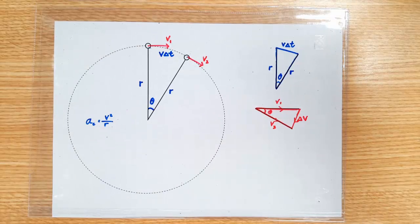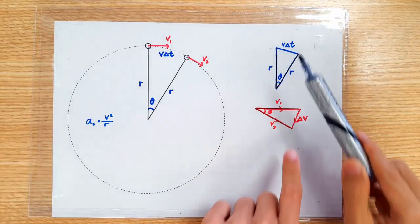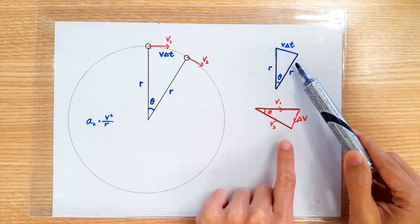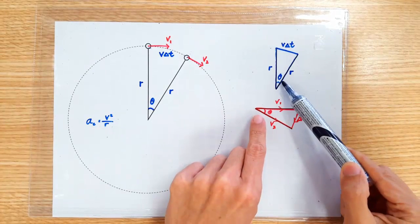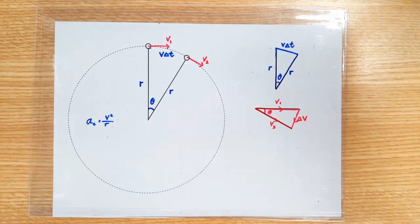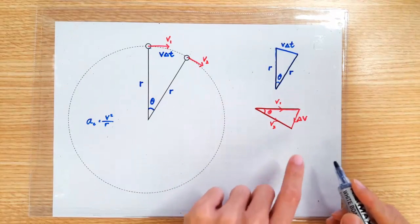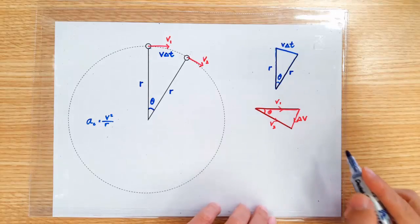Now, back to the two triangles. Do you realize that these two are similar triangles? Because they are both isosceles triangles, subtended by the same angle theta. What can we do with similar triangles? We can equate the ratio of the corresponding sides, right?